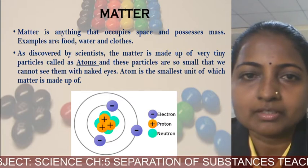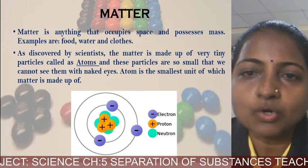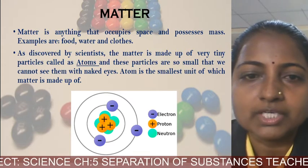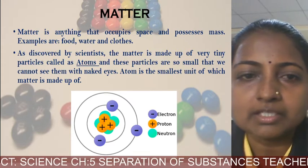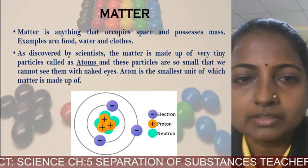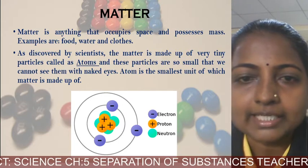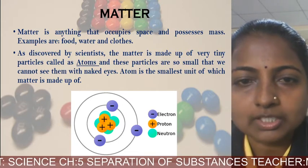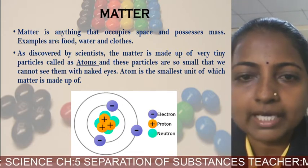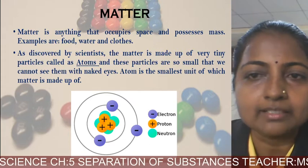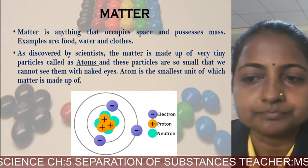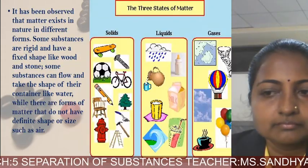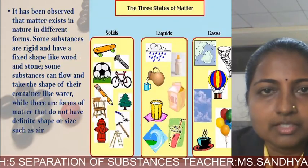These particles are so small that we cannot see them with the naked eye. The atom is the smallest unit of which matter is made up. As you can see in the figure, electrons, protons, and neutrons are present in the atom — you will study this in more detail in higher classes.